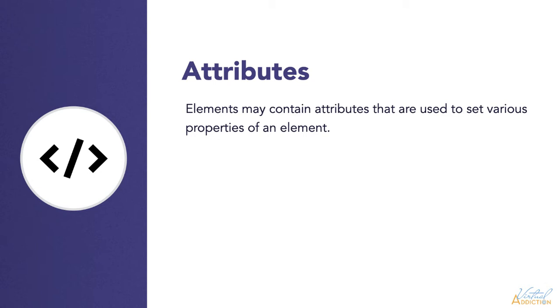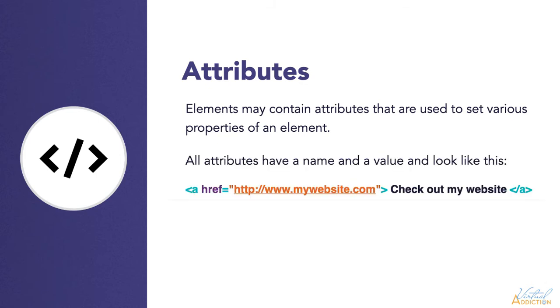Some attributes are defined globally and can be used on any element, while others are defined for specific elements only. All attributes have a name and a value, and they look like this.